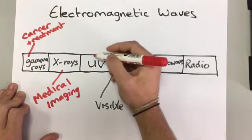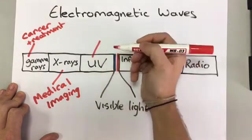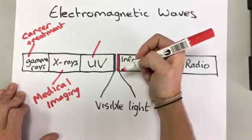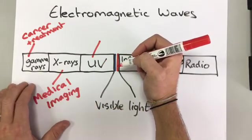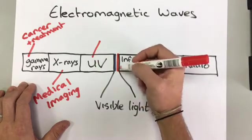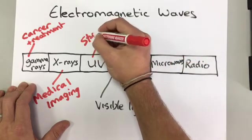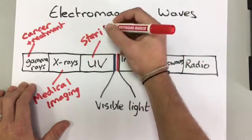Ultraviolet light. Ultraviolet light is used for a lot of different things, but ultraviolet light damages our skin. We get sun cream that protects against ultraviolet. It also kills bacteria, so it's sometimes used for sterilizing equipment like medical equipment.